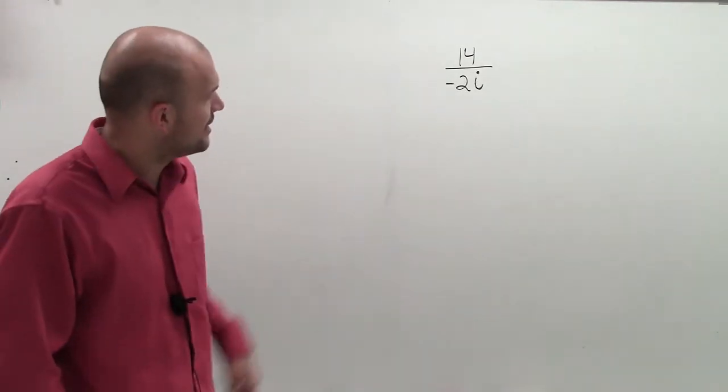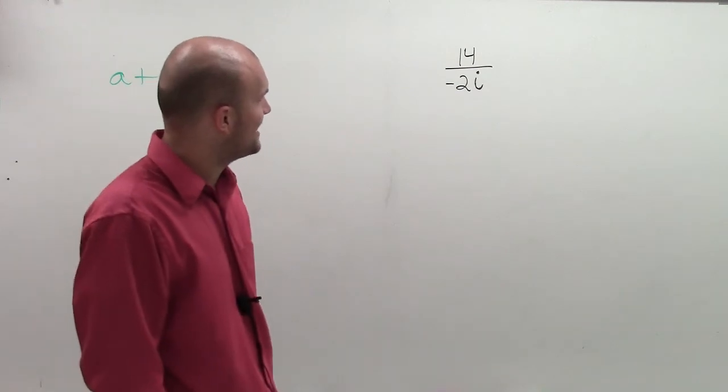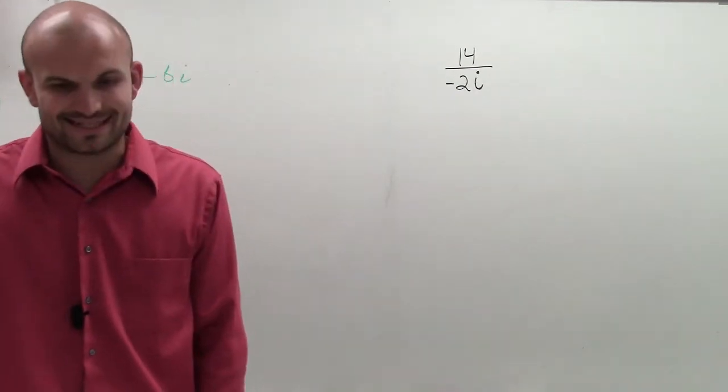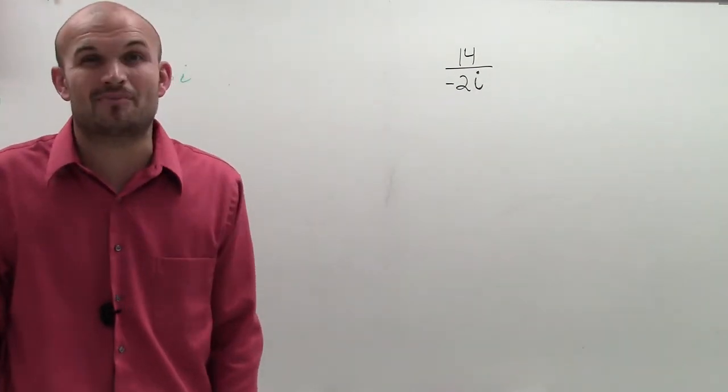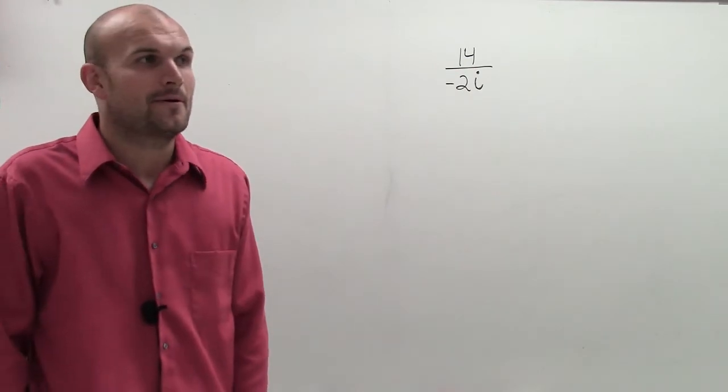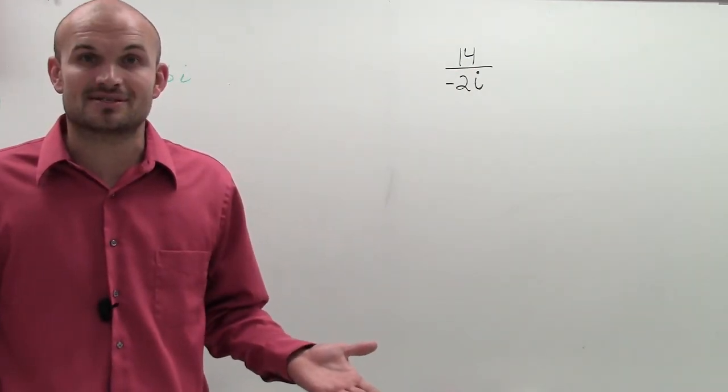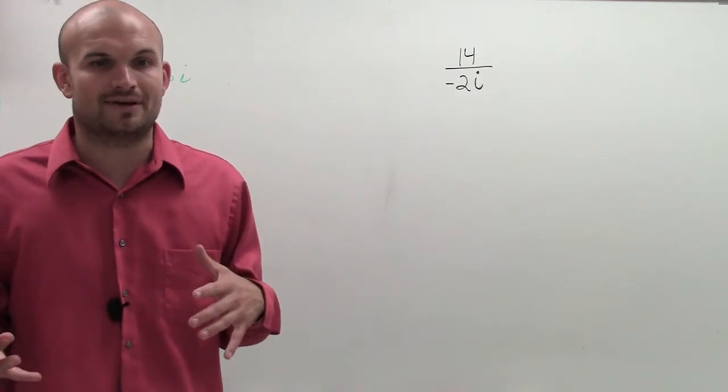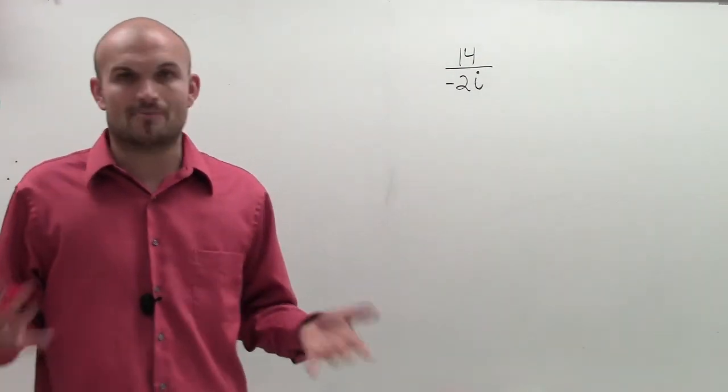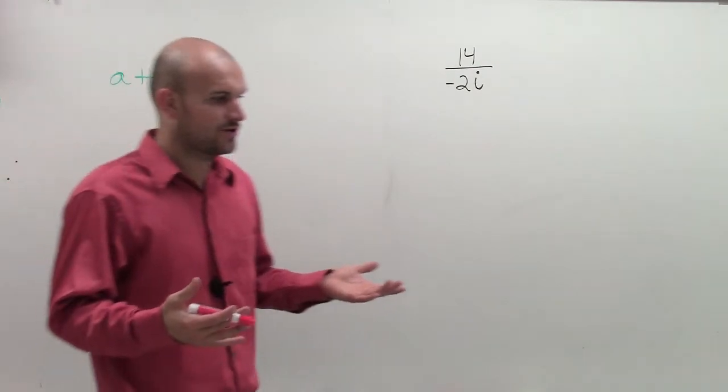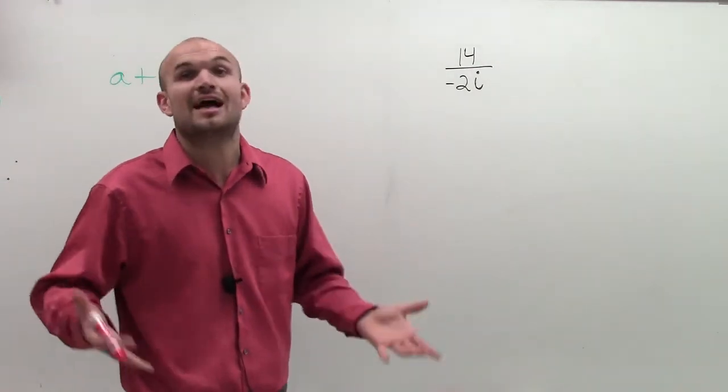So right now we have this complex number, but we have an i on our bottom. And that's a problem because we created i because of our imaginary number system. Our i is going to be our imaginary number system, and so in our real number system, we don't really have a value for i.